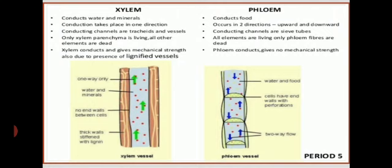The third point: in xylem, the conducting channels are tracheids and vessels — out of the four cell types, only tracheids and vessels are responsible for conduction. In phloem, the conducting channels are the sieve tubes. Regarding living and dead cells: in xylem, only xylem parenchyma is living and all other elements are dead. In phloem, all elements are living except phloem fibers, which are dead. So in xylem, one is living and three are dead, while in phloem, three are living and one is dead. Finally, xylem also provides mechanical strength.